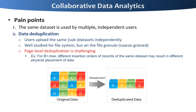In that sense, we need to support page-level deduplication in the database, but this is quite challenging. For example, for B+ trees, different insertion orders of records of the same dataset may result in different physical placement of data. This makes data deduplication really hard to achieve.